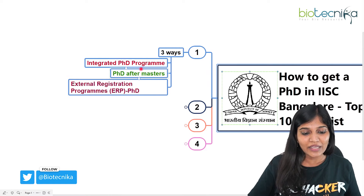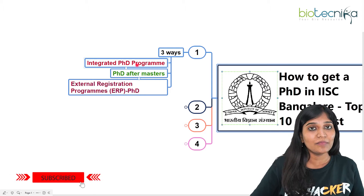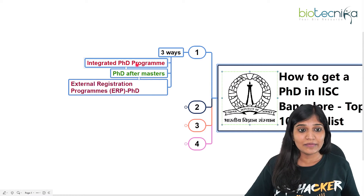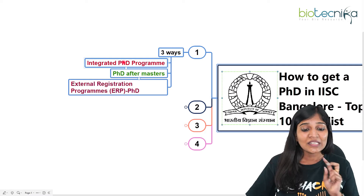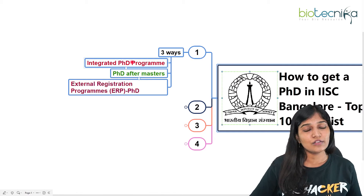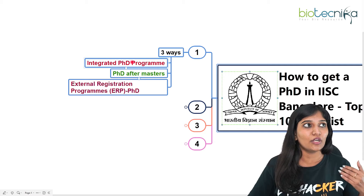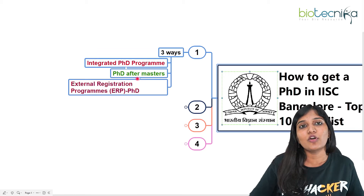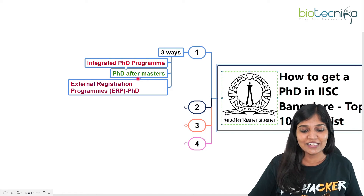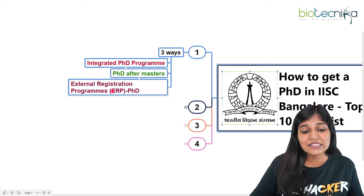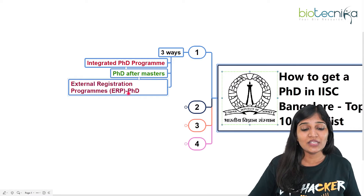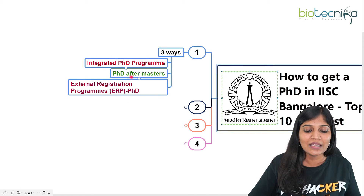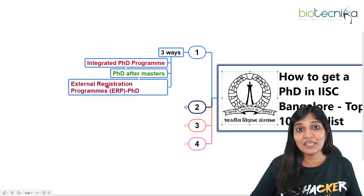The first option is the Integrated PhD program. If you are in your bachelor's but looking to do your master's and PhD together at IISc Bangalore, that is one option. The second option is joining after your master's — whether in MSc Biotechnology, Microbiology, Biochemistry, or anything related. The third option is the External Registration Program (ERP) PhD, for people working in a company with at least two years of experience.